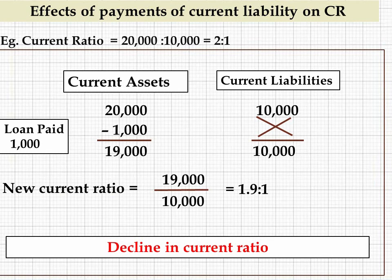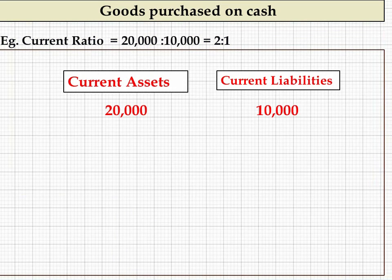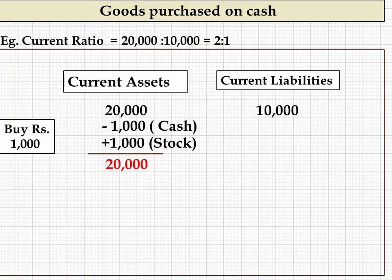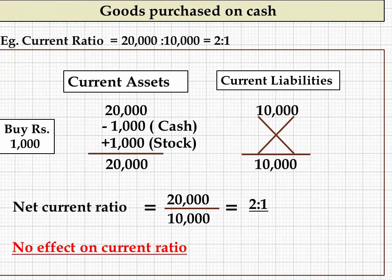What will be the effect on current ratio if goods are purchased on cash? With a ratio of 20,000 to 10,000 (2:1), if the firm buys goods for 1,000 rupees cash, current assets decrease by 1,000 (cash paid) but increase by 1,000 (stock received). So current assets remain 20,000 and current liabilities remain 10,000. The ratio stays at 2:1 — there is no effect on the current ratio.